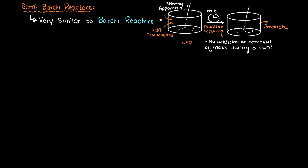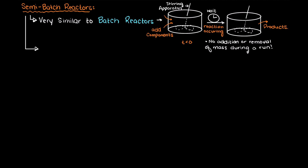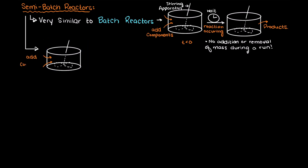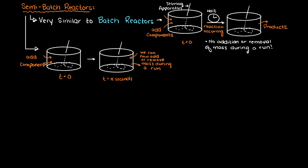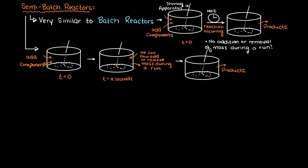This is where a semi-batch reactor differs from a batch reactor. In a semi-batch reactor, we are performing some batch process like we did in a batch reactor, but we are now allowed to add or remove something during the process. Therefore, we usually have another inlet or outlet stream to facilitate this addition or removal of mass.